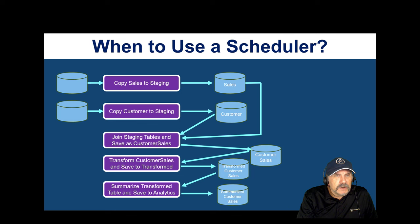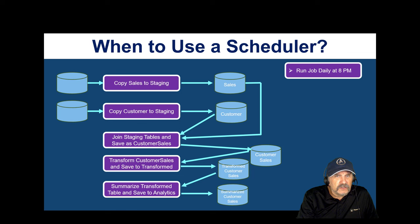Databricks has adopted this pattern and calls it the medallion architecture, though it's been around a long time. Staging is bronze, transformed is silver, and the aggregated layer is gold. This pattern is very simple and basic, and if all you need is to run this job on a daily basis at 8 p.m., a job scheduler is the easiest choice.